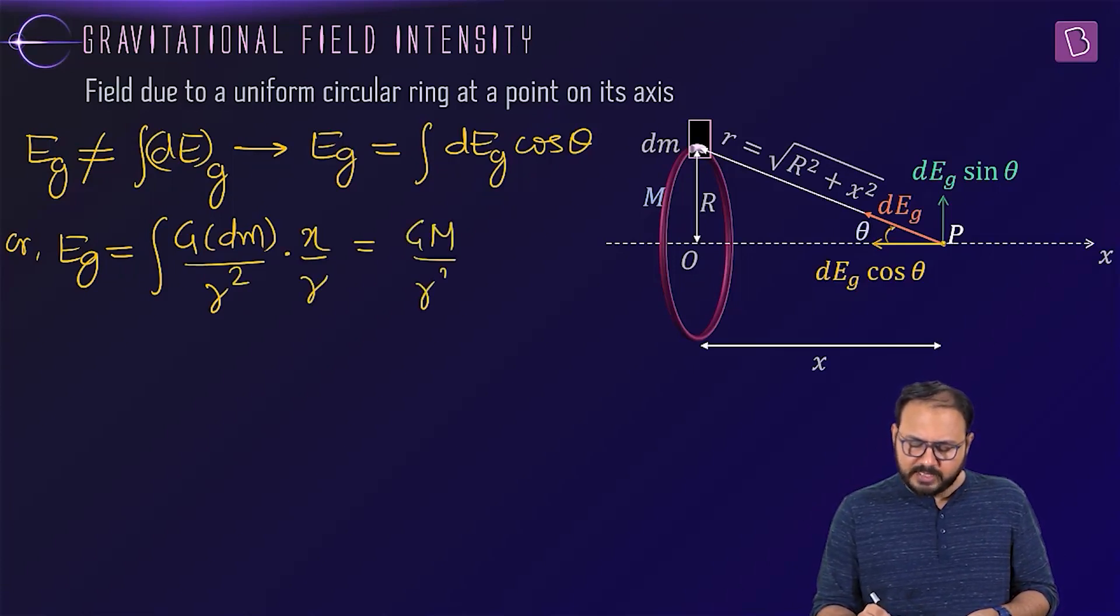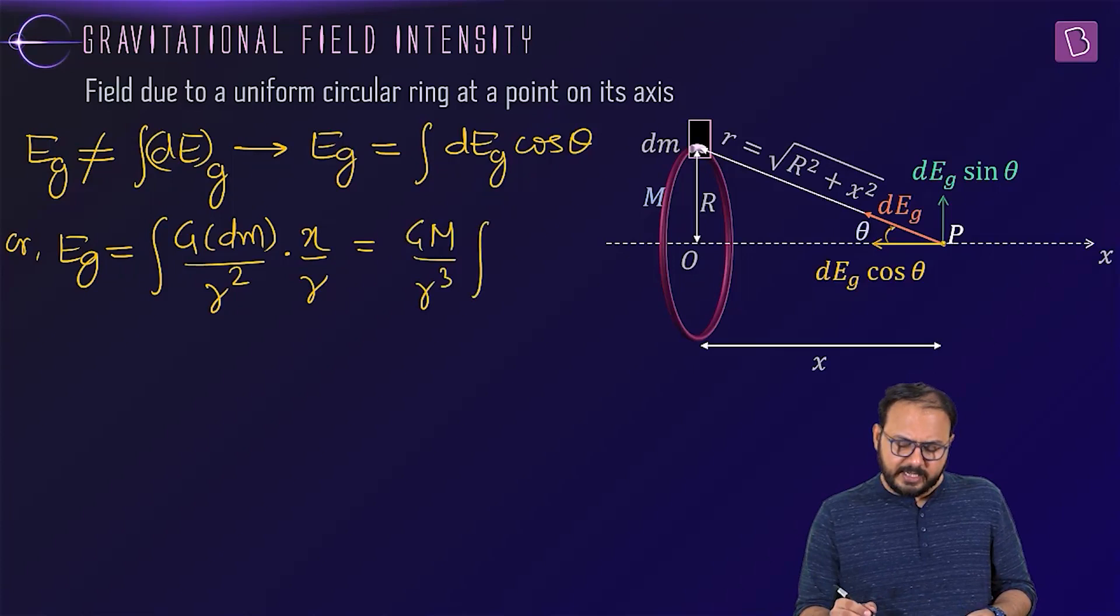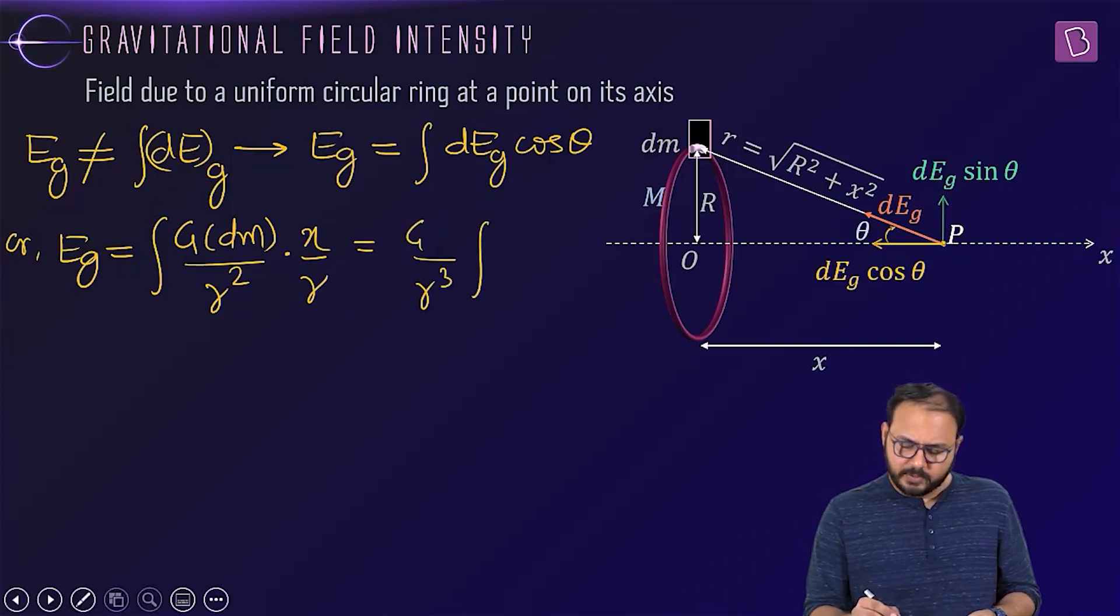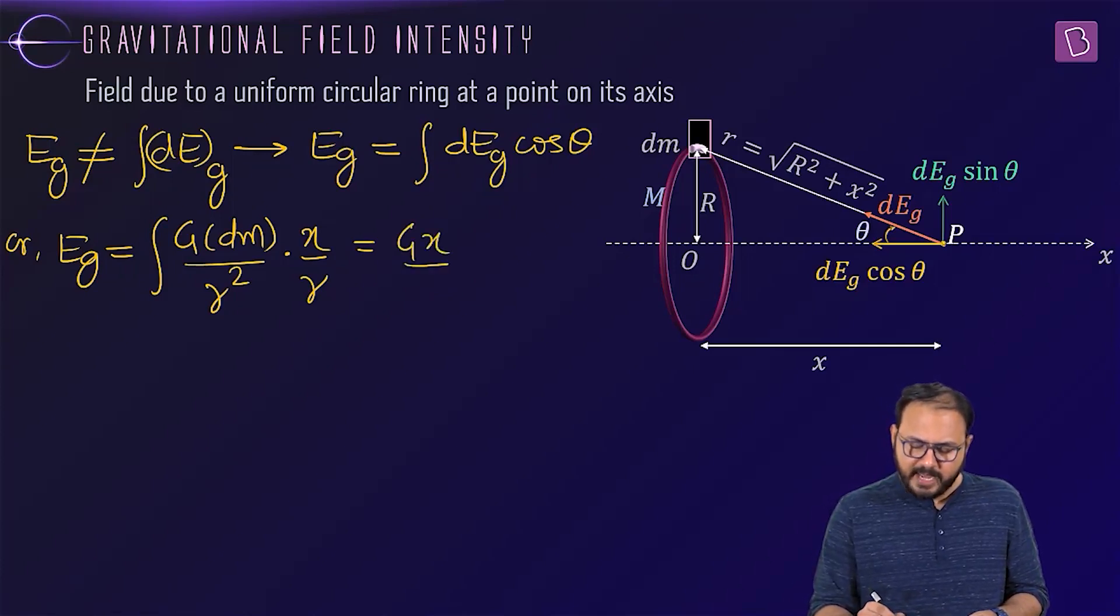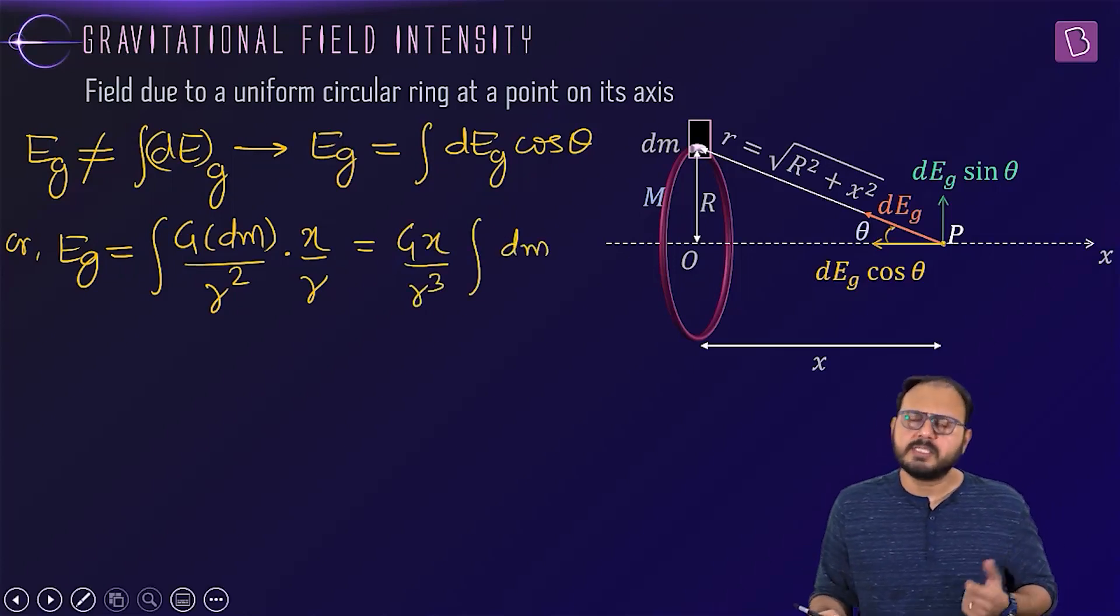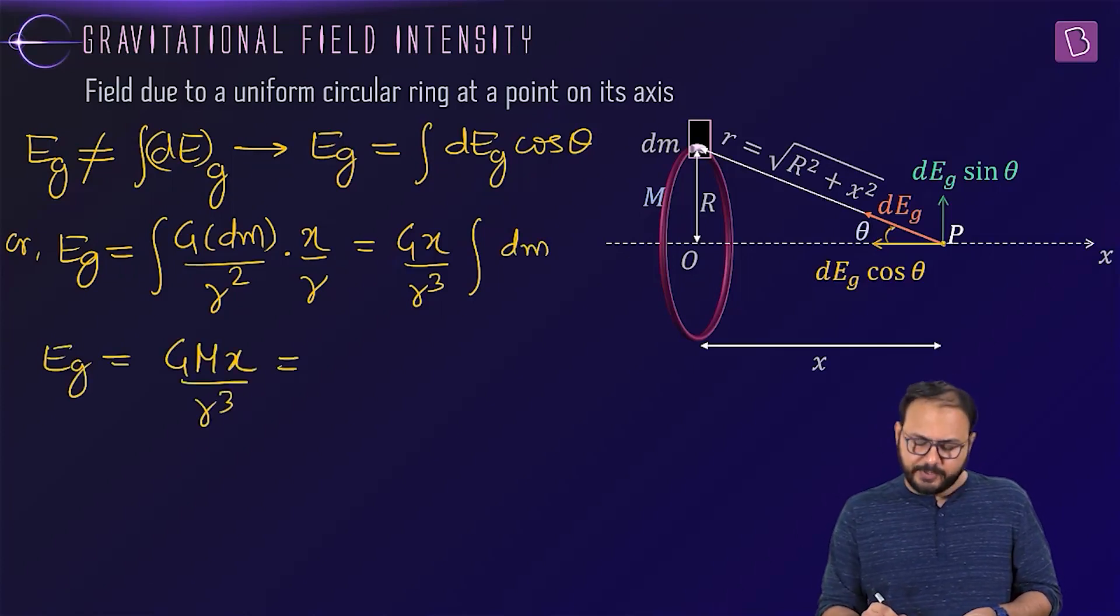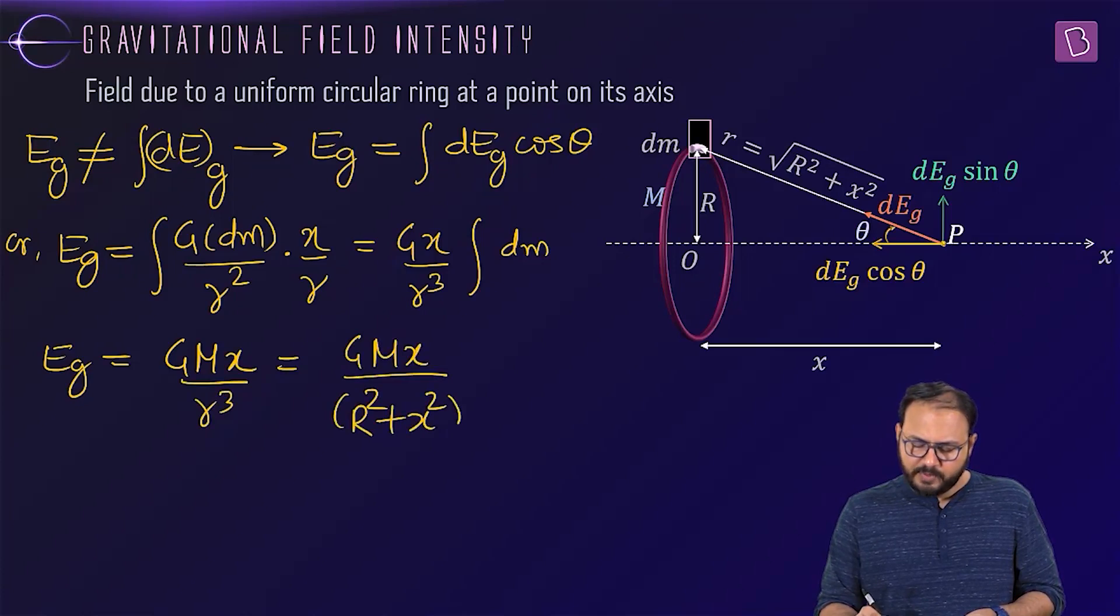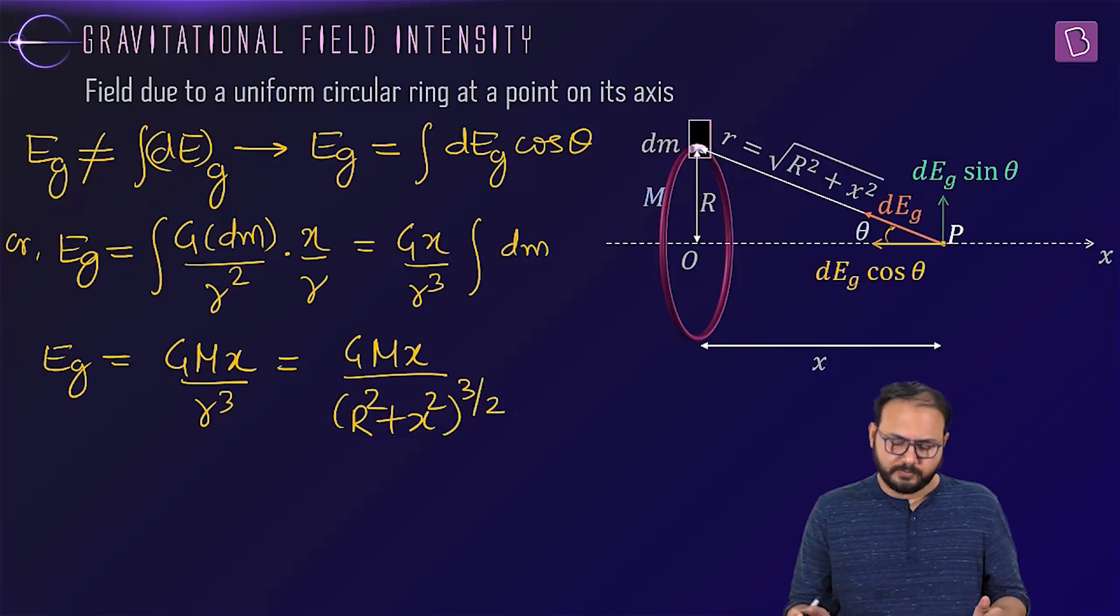So gm by r cube comes out. Does it or not? Yes, it does. And inside is integration gx by r cube comes out. Isn't it? Yes, sir. Inside is integration dm. What is integration dm? Sum of all masses. What is it? Total mass. Good. So Eg is gmx by r cube. Do you agree or not? Yes, we do, sir. Or r is under root r squared plus x squared. So cube means cubic power of the half. So 3 by 2.